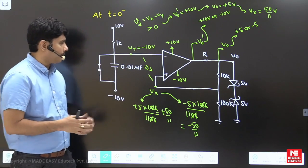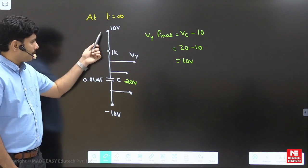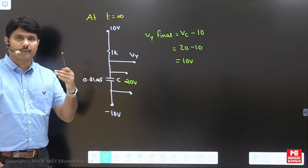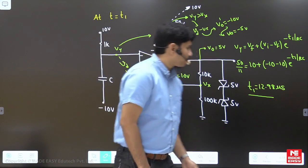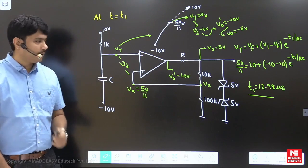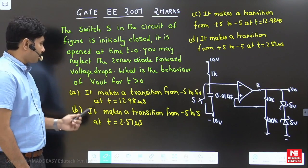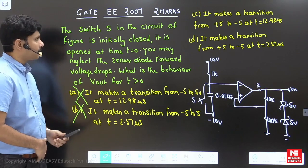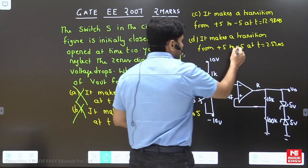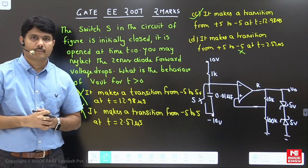To summarize: at t → ∞ the capacitor charges to 20V, so V_y final = 10V. Using the capacitor charging formula, the transition occurs at 12.98 μs. Looking at the options: 'transition from −5 to +5V' is wrong; 'transition from +5 to −5V at 12.98 μs' is the correct answer. This is an interesting question every student should learn.